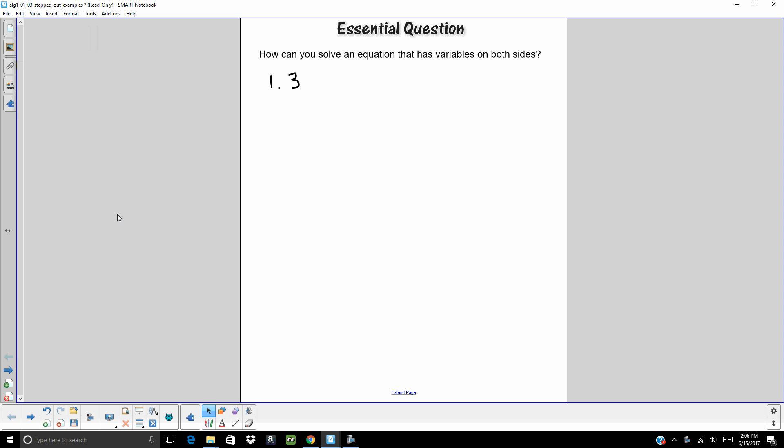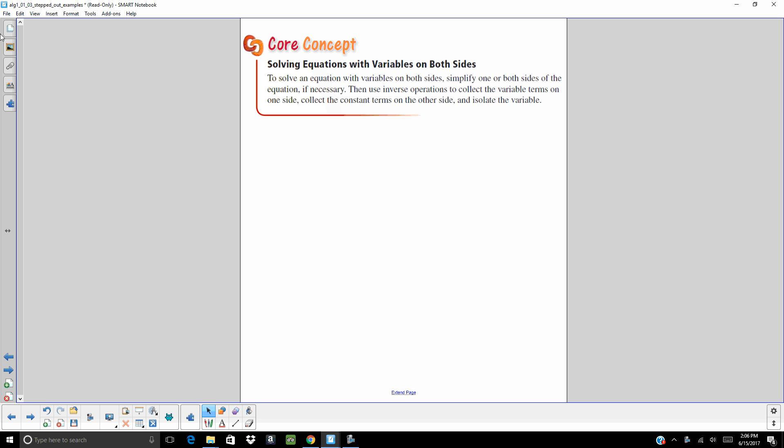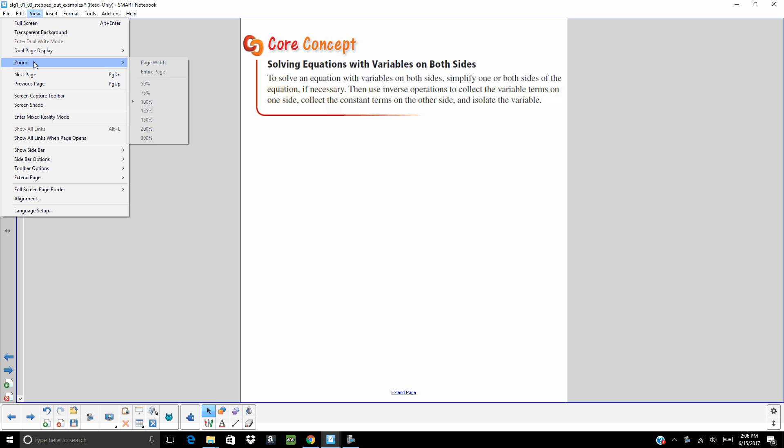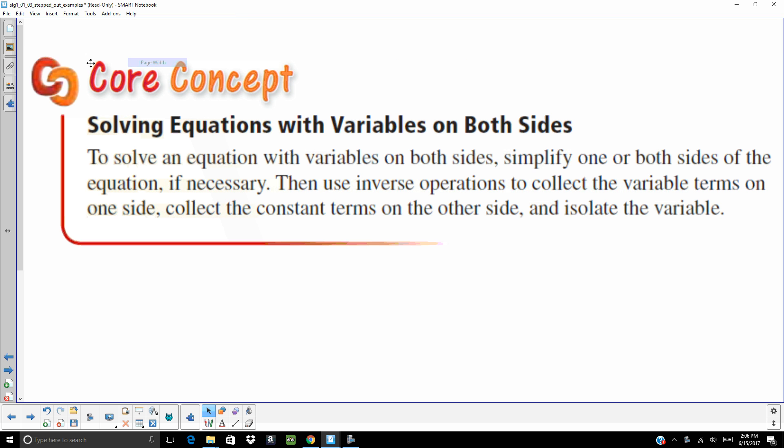All right, today we are doing Chapter 1, Section 3 in Algebra 1. Our essential question is how can you solve an equation that has variables on both sides. So we're going to go ahead and start with our core concept. Make that a little bigger so it's a little easier to see. Again, this is a video, so I'm going to be going through some of these pretty quickly, but you have the capability to stop and pause any time you need to.